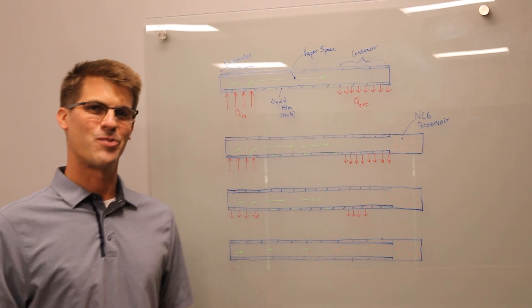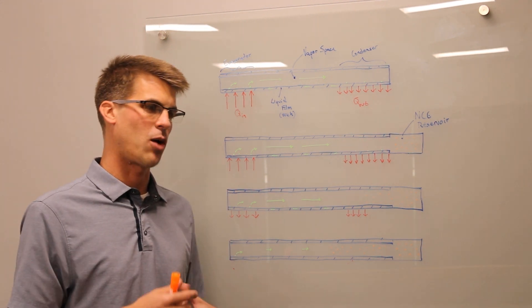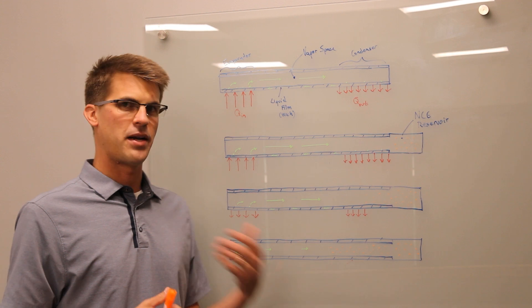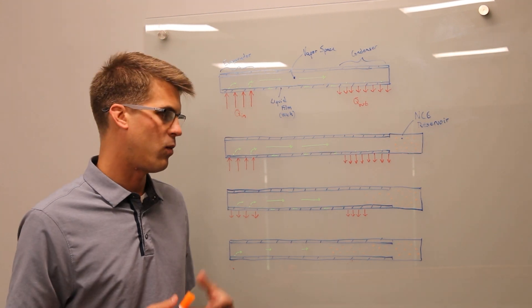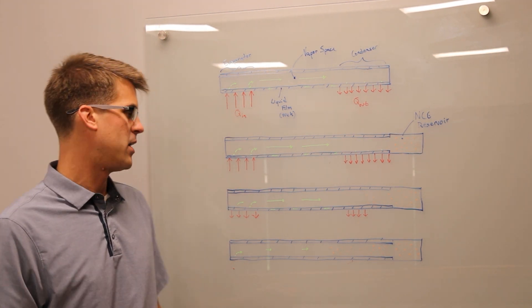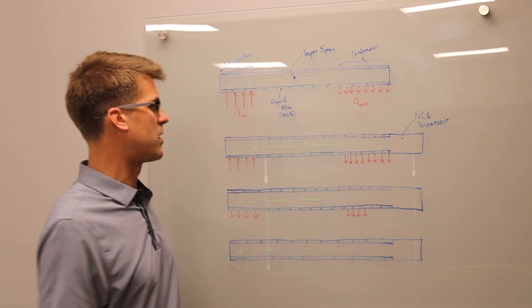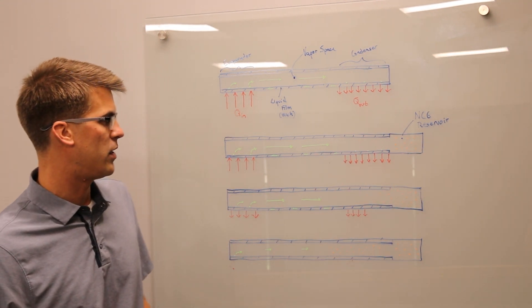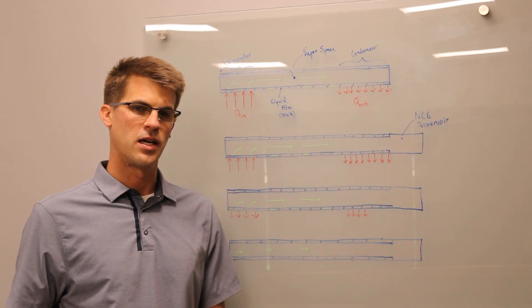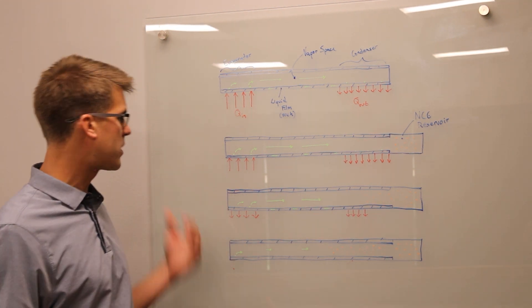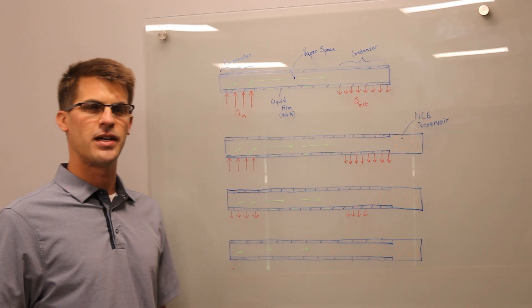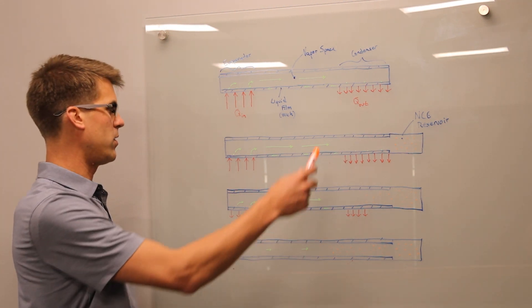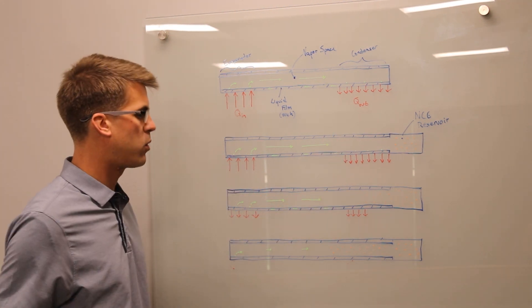That's the basic overview of how the variable conductance heat pipe can actually help control conductance depending on the power inputs. And one more thing just to note is that what's currently drawn here is the reservoir on the condenser side. We would call this a cold reservoir VCHP. We also have developed and built warm reservoir VCHPs which operate in a similar fashion. However, the reservoir is on the evaporator portion.